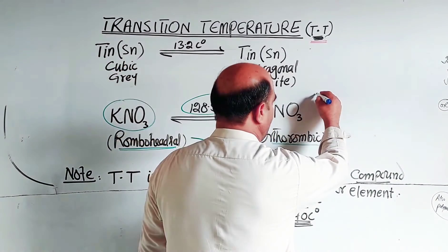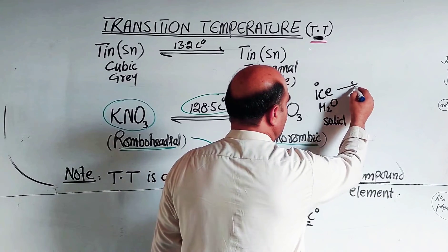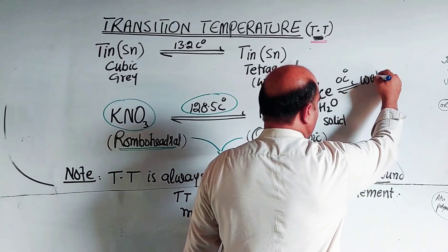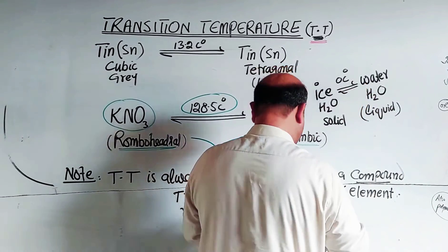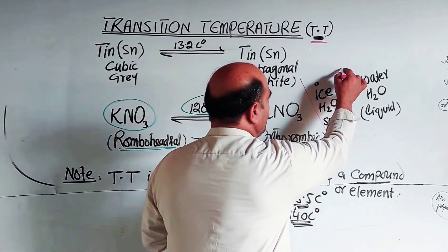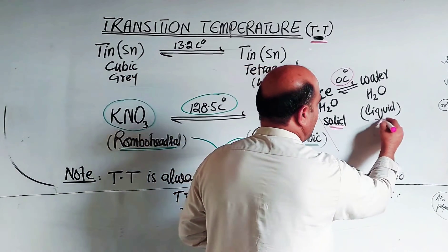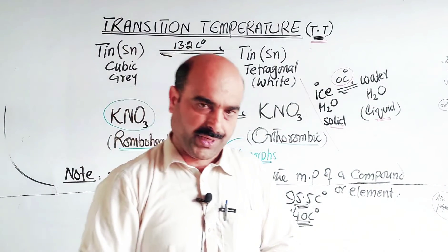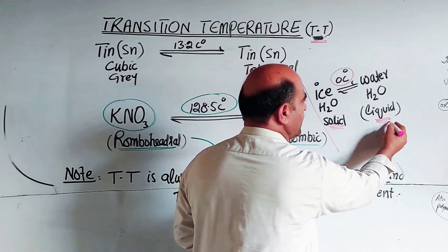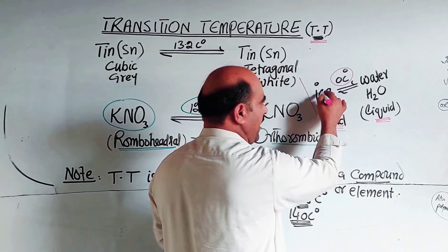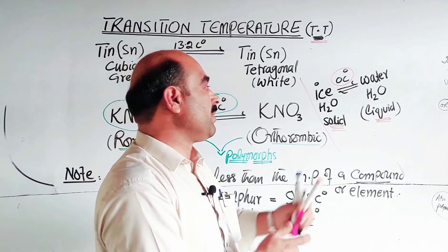Another example: ice has the formula H2O in the solid state. Its transition temperature is 0°C, at which it becomes water — formula H2O — in the liquid state. At 0°C, both the solid state (ice) and liquid state (water) co-exist simultaneously. This 0°C is also known as the transition temperature because above 0°C only liquid exists and below 0°C only solid ice exists.